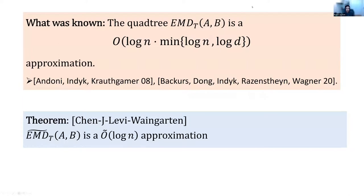What was previously known was that EarthMover Distance gave roughly a log-squared approximation. In this work, we show that this new data-dependent EarthMover Distance with data-dependent edge weights tilde-w gives an improved O-tilde(log n) approximation — going from roughly log-squared to log n up to log-log factors. That is our improved approximation.